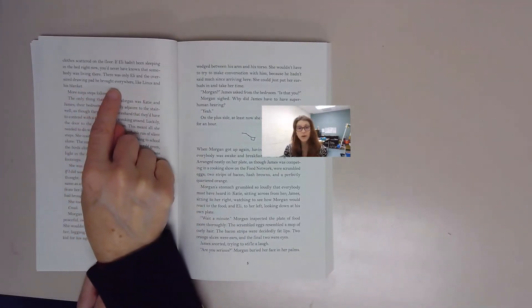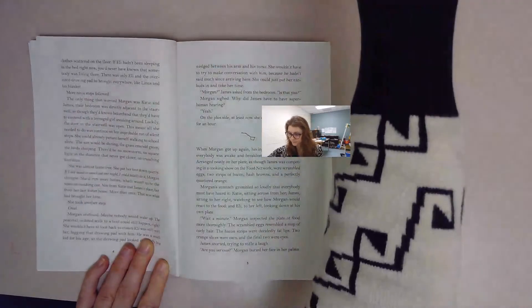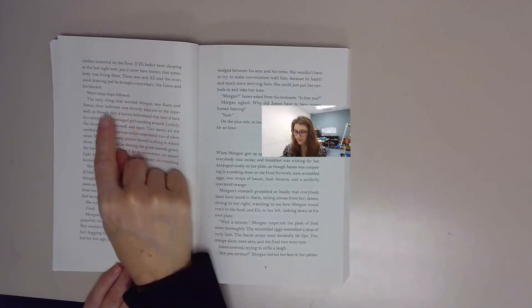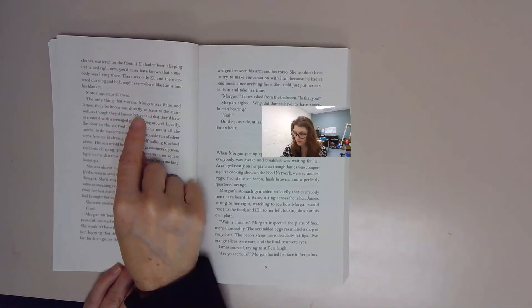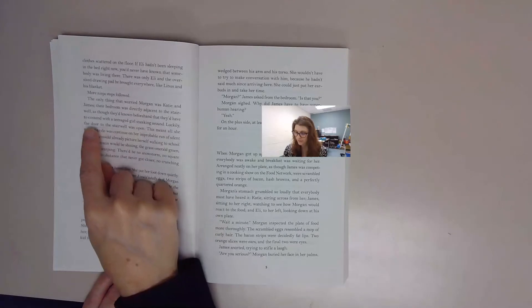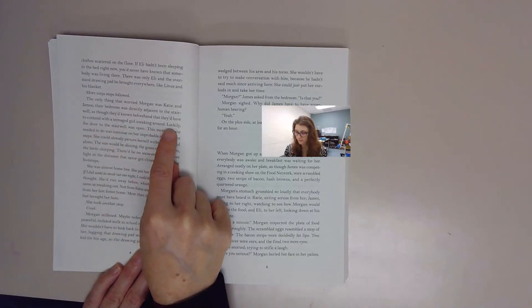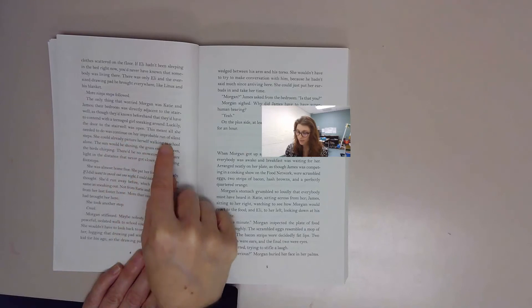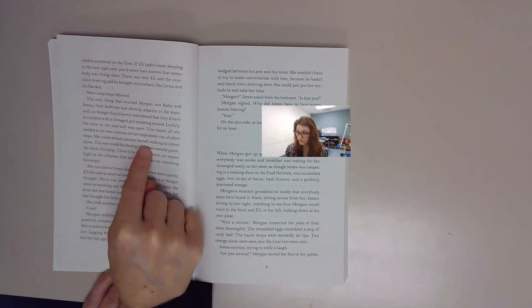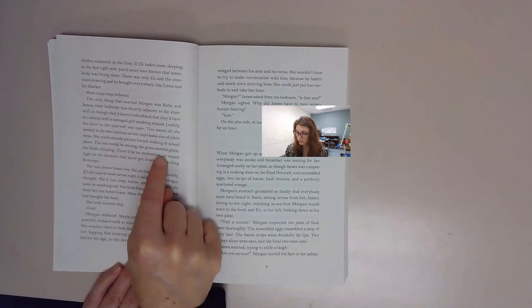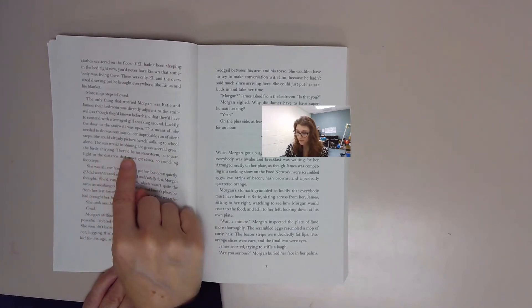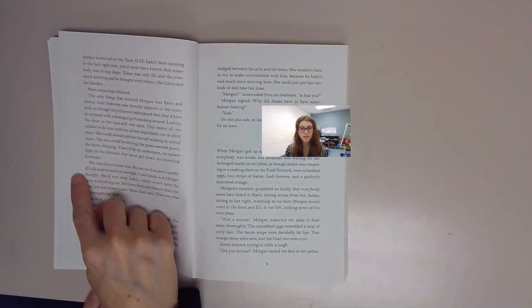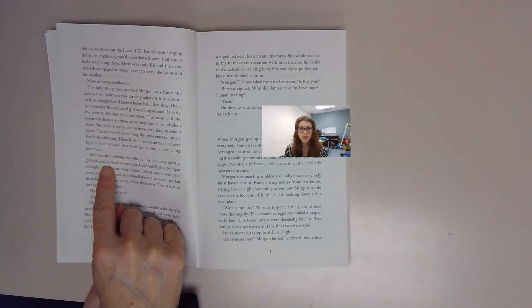More ninja steps followed. The only thing that worried Morgan was Katie and James. Their bedroom was directly adjacent to the stairwell, as though they'd known beforehand that they'd have to contend with a teenage girl sneaking around. Luckily, the door to the stairwell was open. This meant all she needed to do was continue on her improbable run of silent steps. She could already picture herself walking to school alone. The sun would be shining, the grass emerald green, the birds chirping. There'd be no snowstorm, no square light in the distance that never got closer, no crunching footsteps. She was almost home free.